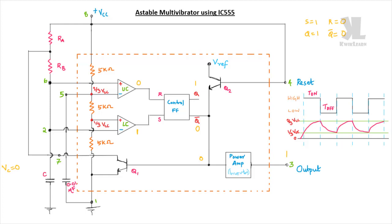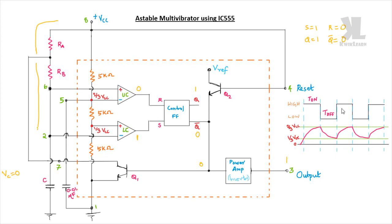With Q' equal to 0 fed into the Q1 transistor, Q1 is in the off state. In off state, the discharge pin is in open circuit. Therefore, the capacitor will start to charge toward VCC.